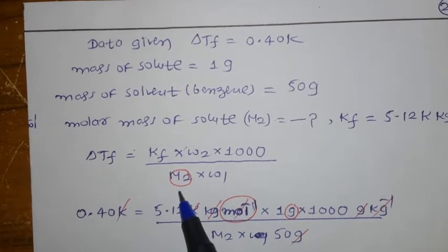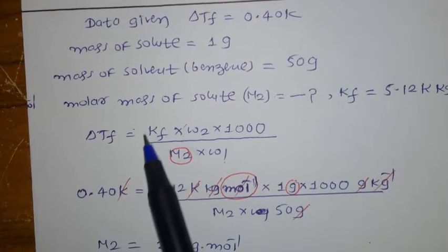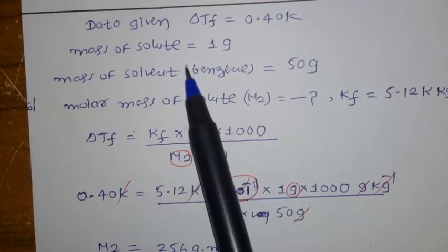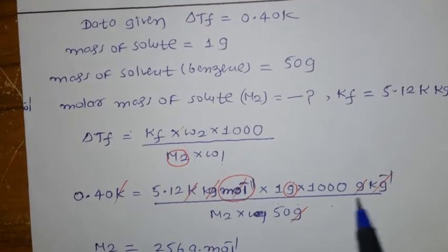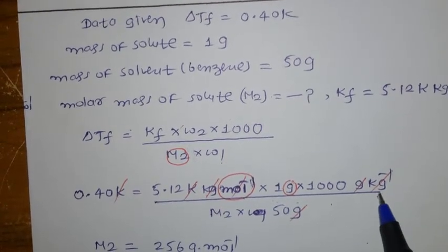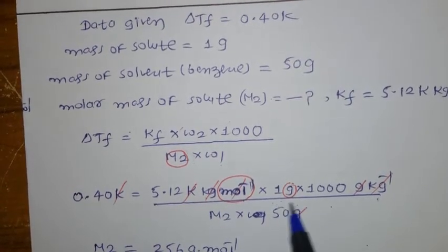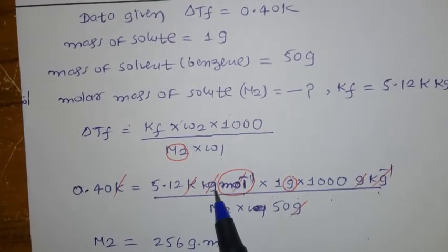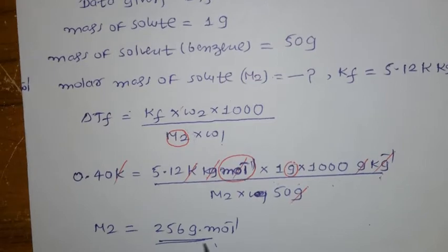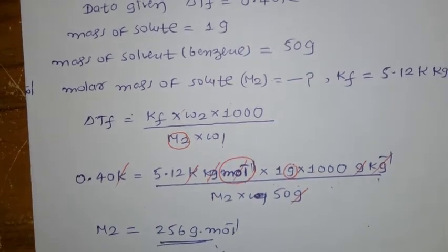Using the formula: ΔTf = Kf × (w2 × 1000) / (M2 × w1). Substituting: 0.40 = 5.12 × (1 × 1000) / (M2 × 50). Solving for M2: molar mass of solute = 256 grams per mole. This is an application of the colligative property — using depression in freezing point to calculate the molar mass of a solute.